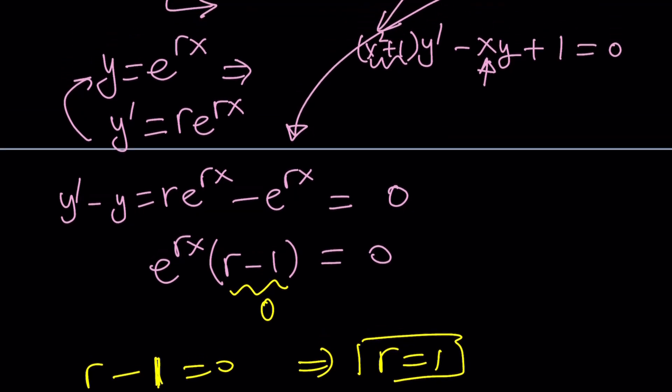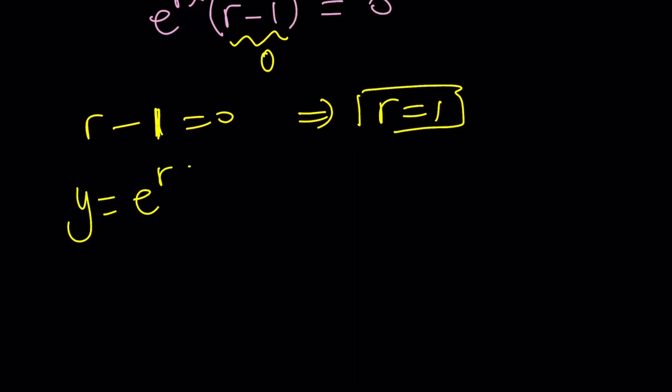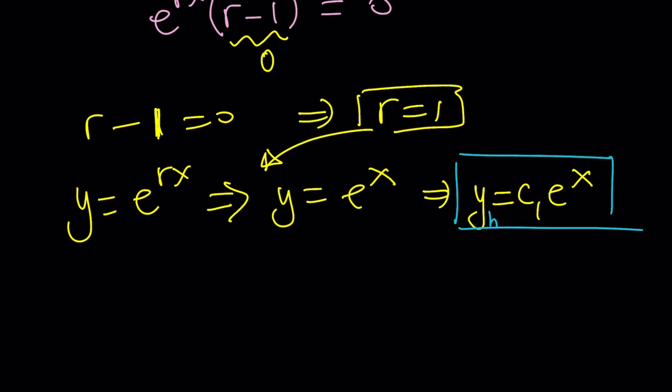We assumed that the solution was in this form, y equals e to the power rx. Since r is 1, we can go ahead and write the solution as y equals e to the power x. Of course, this is just one solution; there are infinitely many solutions up to a constant. So, we can write this in a more general form as y equals c sub 1 times e to the power x. This is the homogeneous solution.